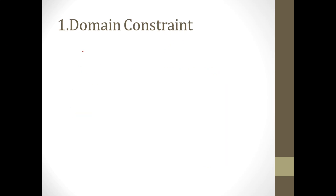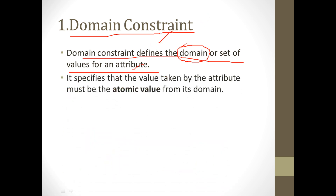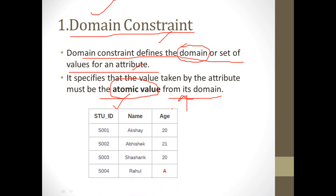The first one is domain constraint. Domain constraint defines a domain or set of values for an attribute. It specifies that the value of an attribute must be an atomic value from its domain. For example, in a student table, if an attribute has a value that is not allowed within the defined domain, that is a domain constraint violation.